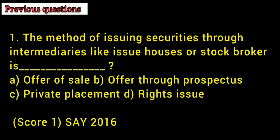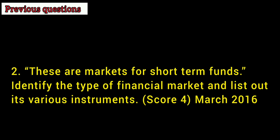1st question: The method of issuing securities through intermediaries like issue houses or stockbrokers is called what? 2nd question: These are markets for short-term funds — identify the type of financial market and list out its various instruments.